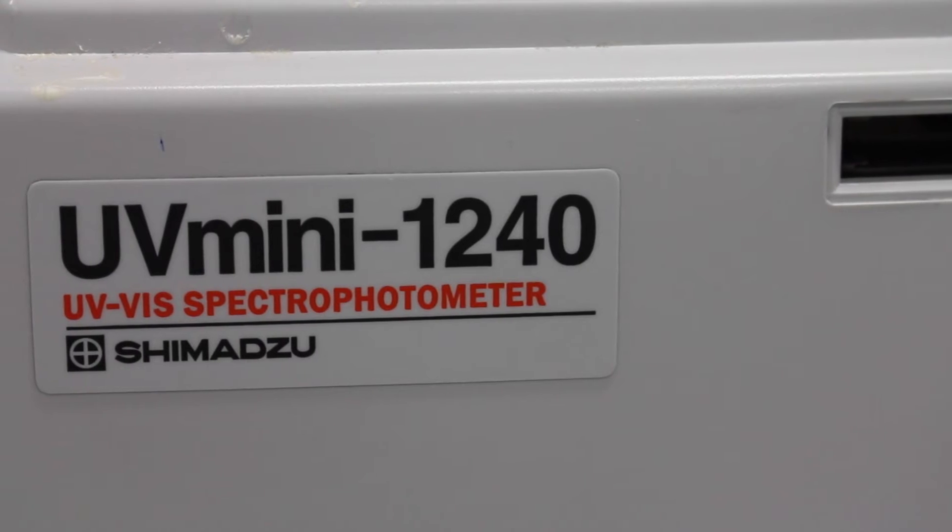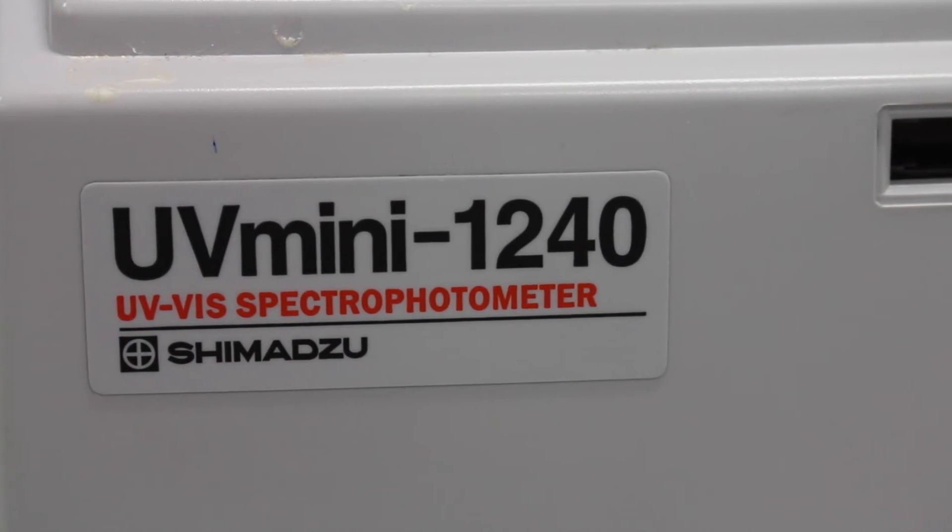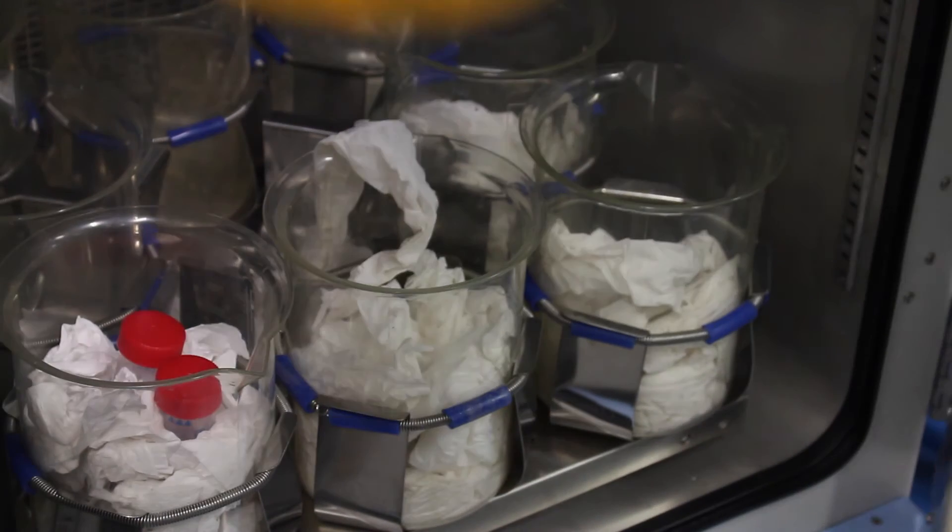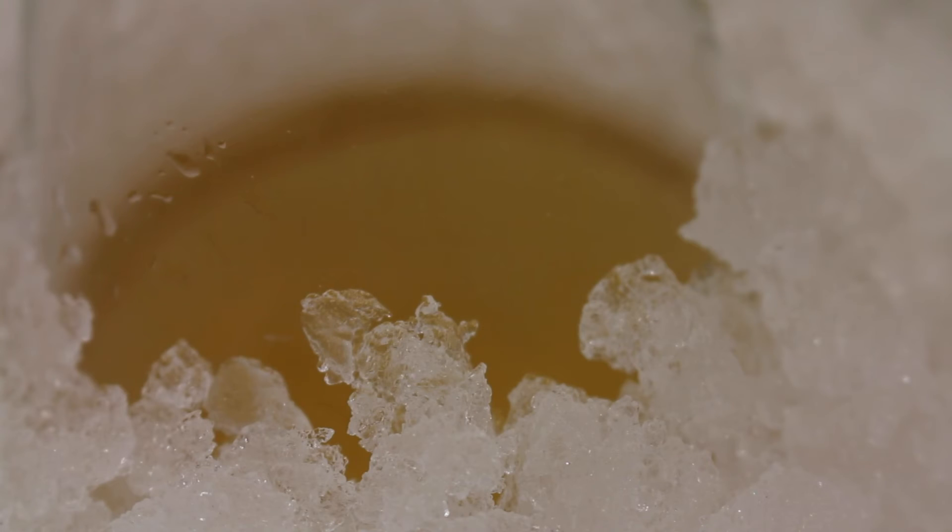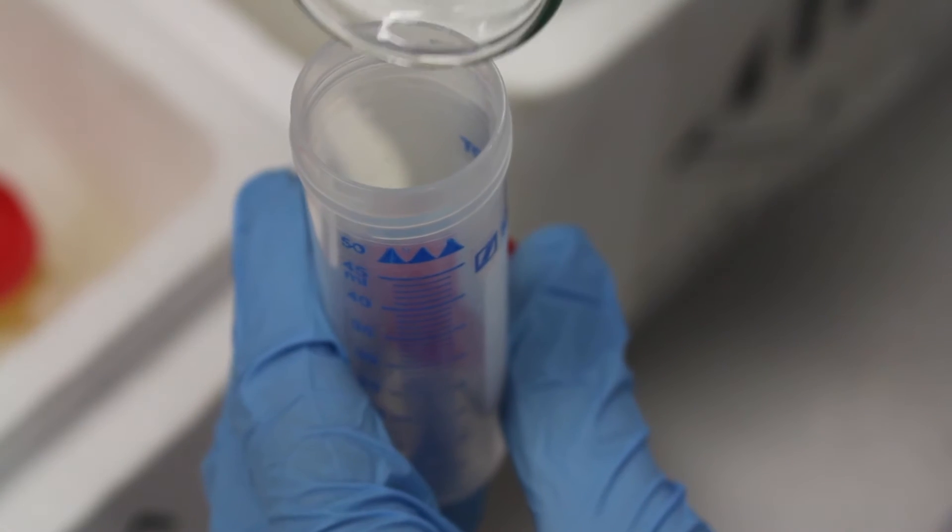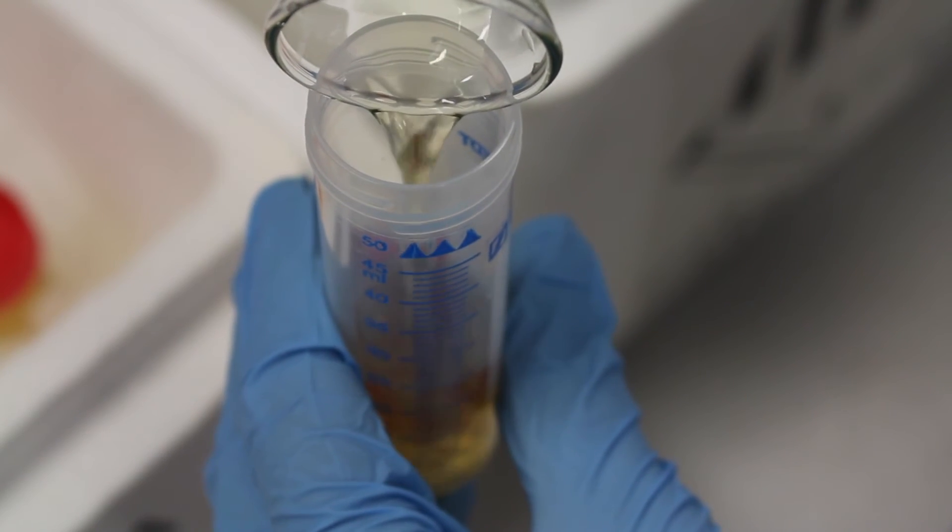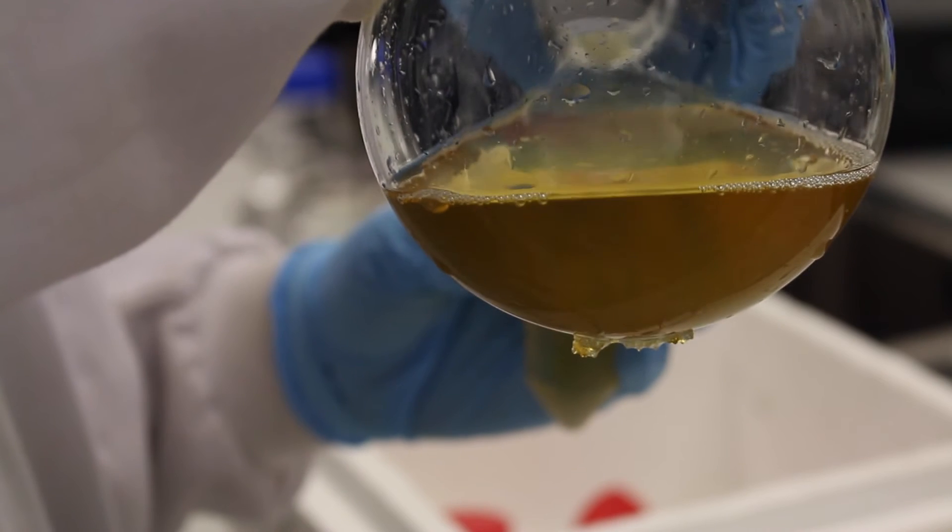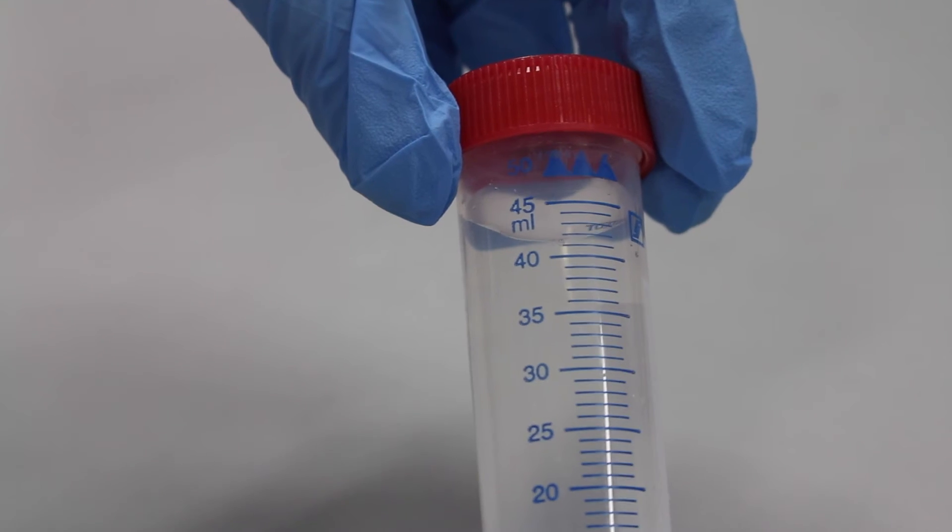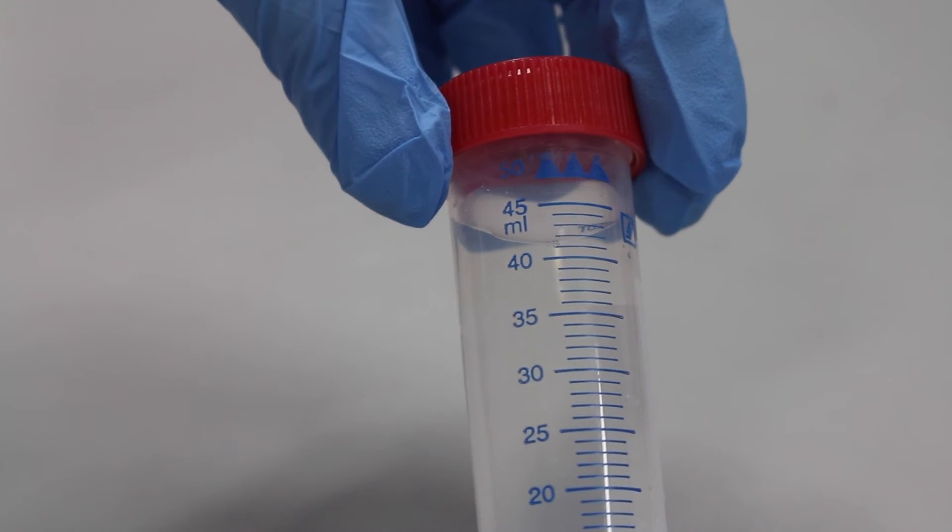Once the optical density is at or around 0.3, the culture is removed from the incubator and allowed to sit on ice for 15 minutes. The culture is divided between 5 pre-chilled falcon tubes by adding 50 ml of the culture into each tube. An additional falcon tube is filled with water and serves as the balance tube.